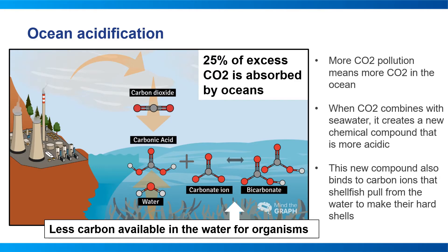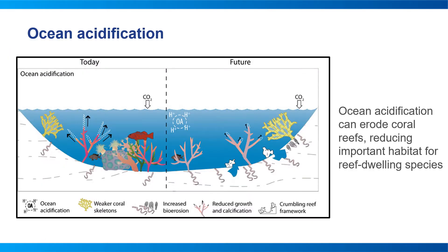In addition to ocean warming and sea level rise, ocean acidification is also increasing. Ocean acidification refers to a reduction in the pH of the ocean over an extended period of time, caused primarily by the uptake of carbon dioxide pollution from the atmosphere. With 25% of excess carbon dioxide being absorbed by the ocean, there is an increase in hydrogen ions. Those ions cause the seawater to be more acidic, meaning fewer carbonate ions are available — resulting in less carbon being available in the water for organisms. Carbonate ions are an important building block of structures such as seashells and coral skeletons.